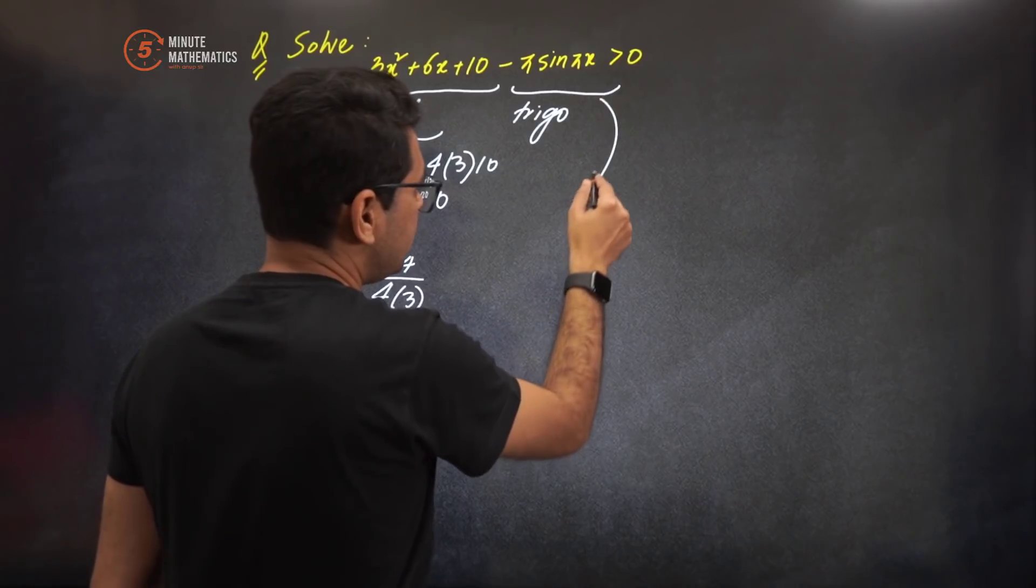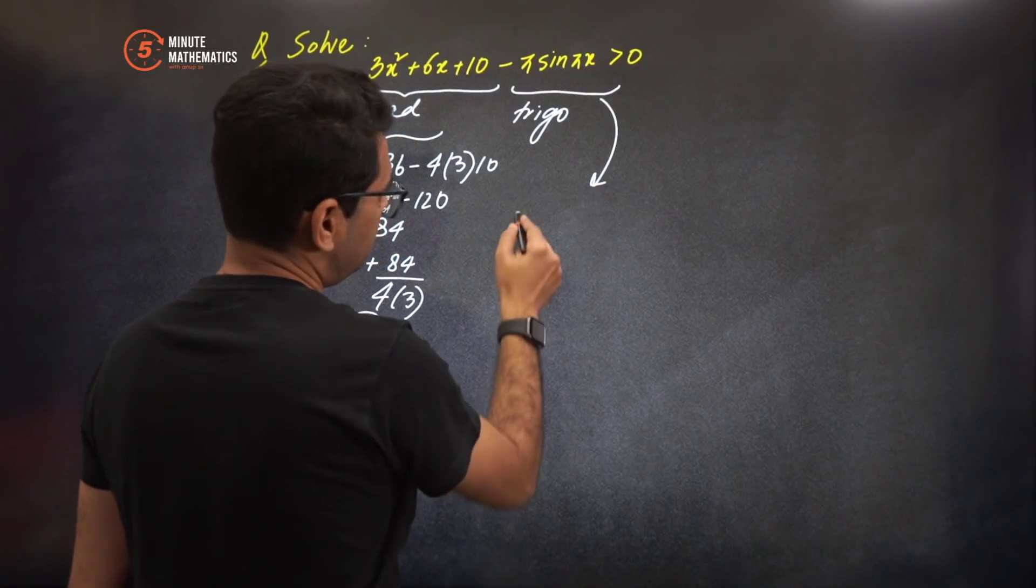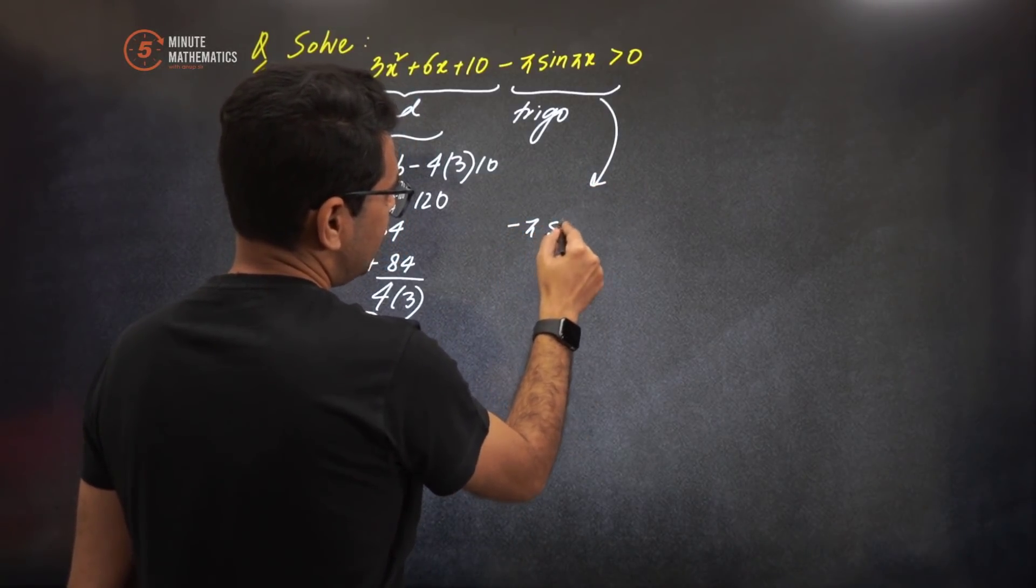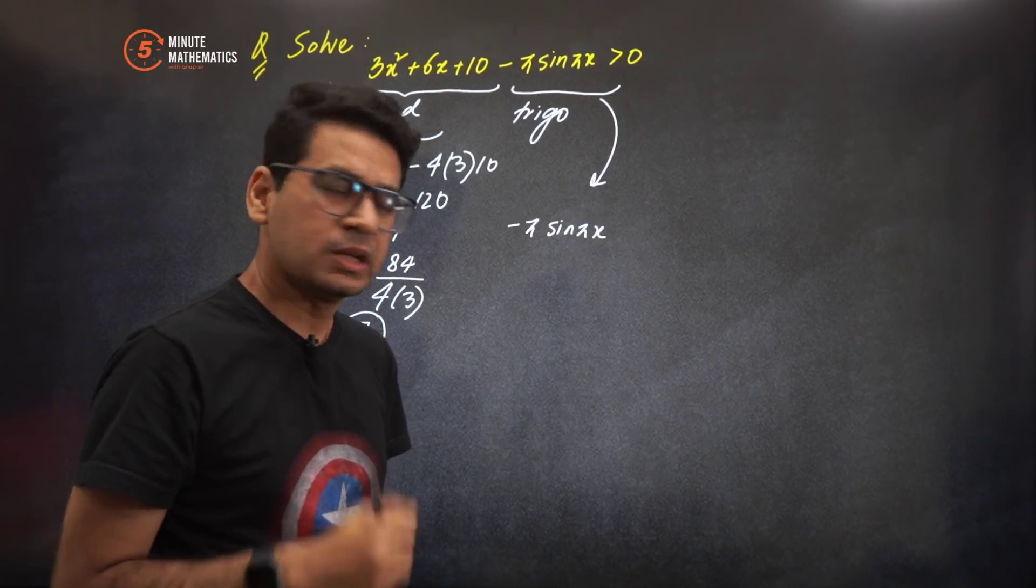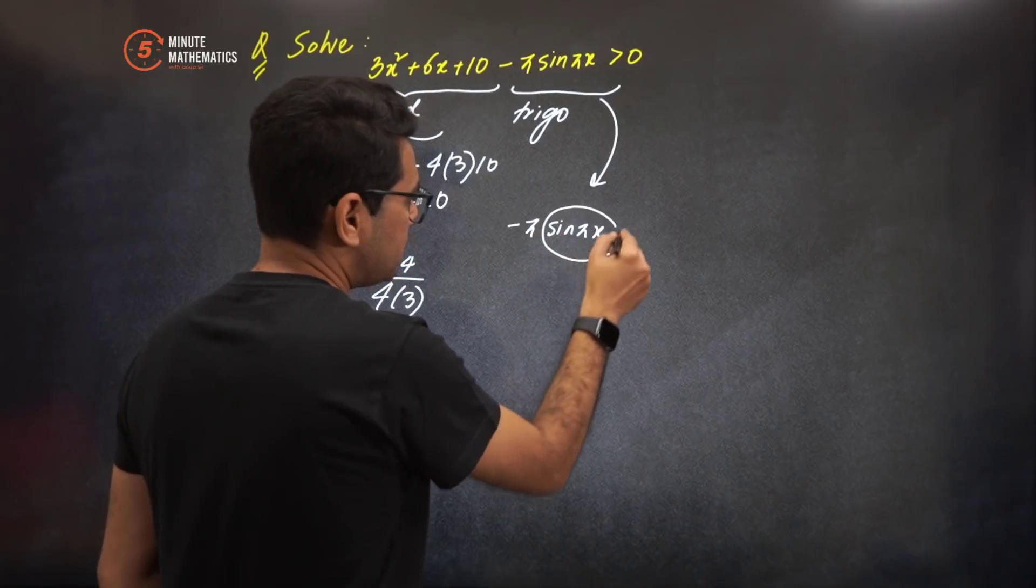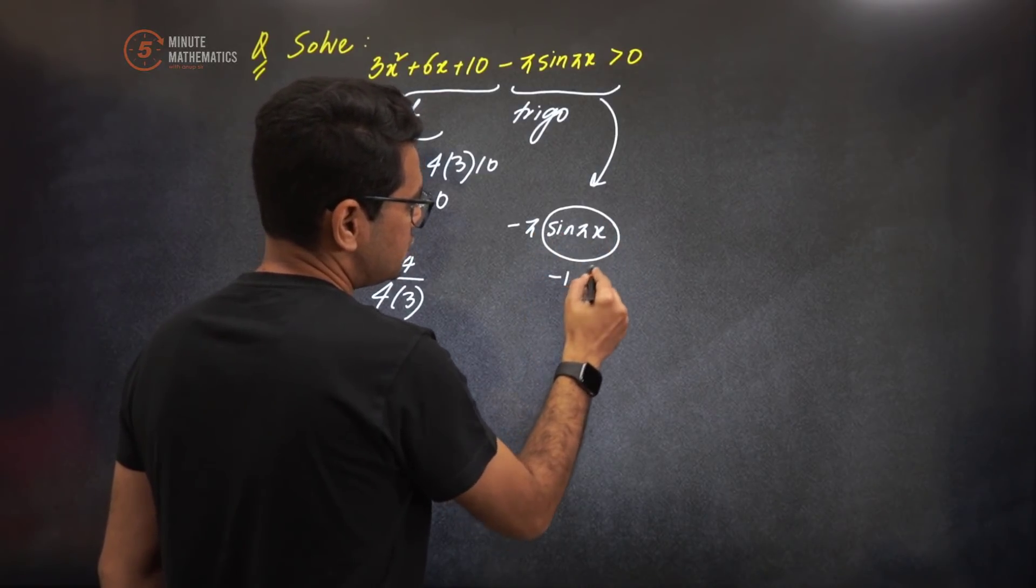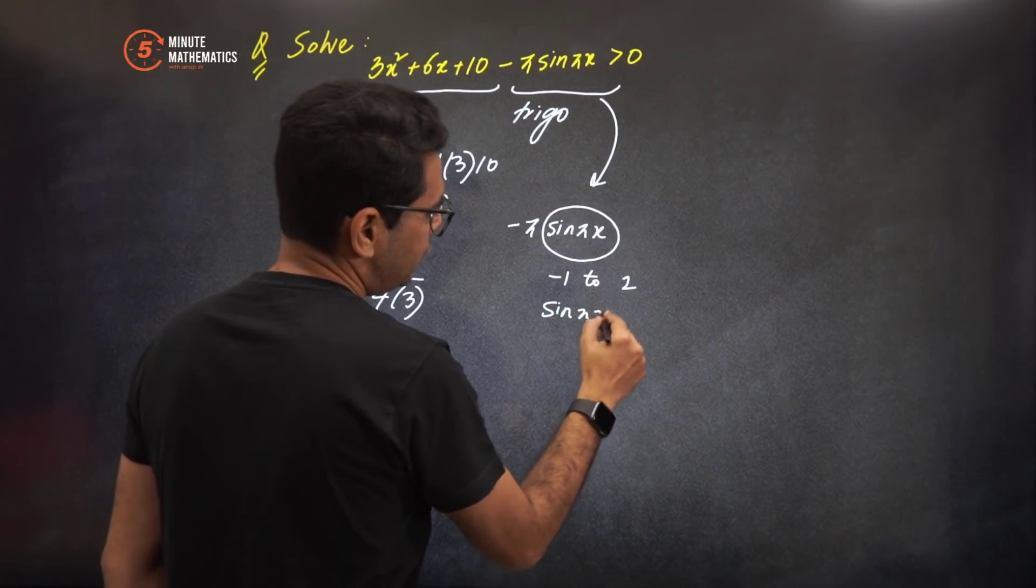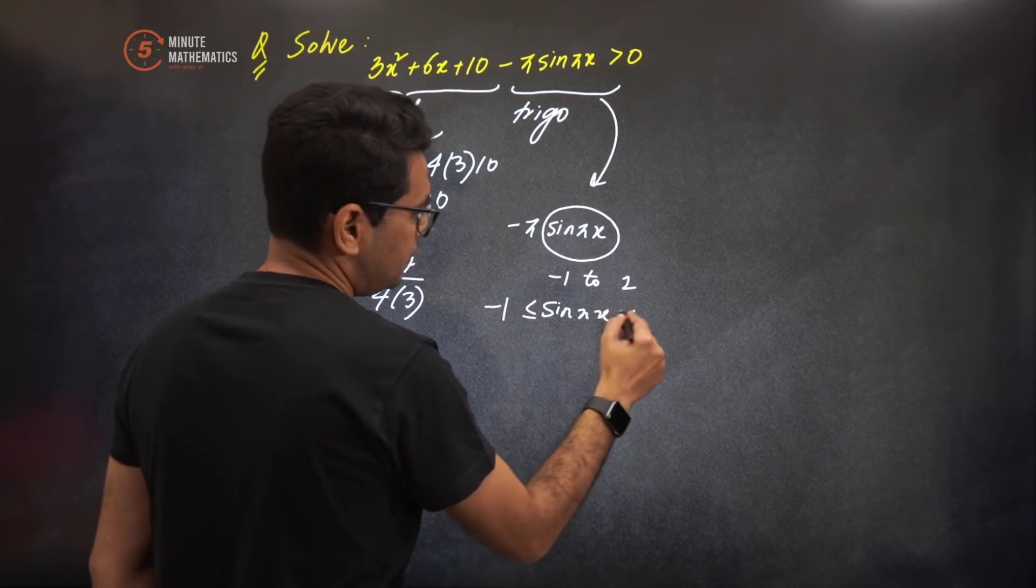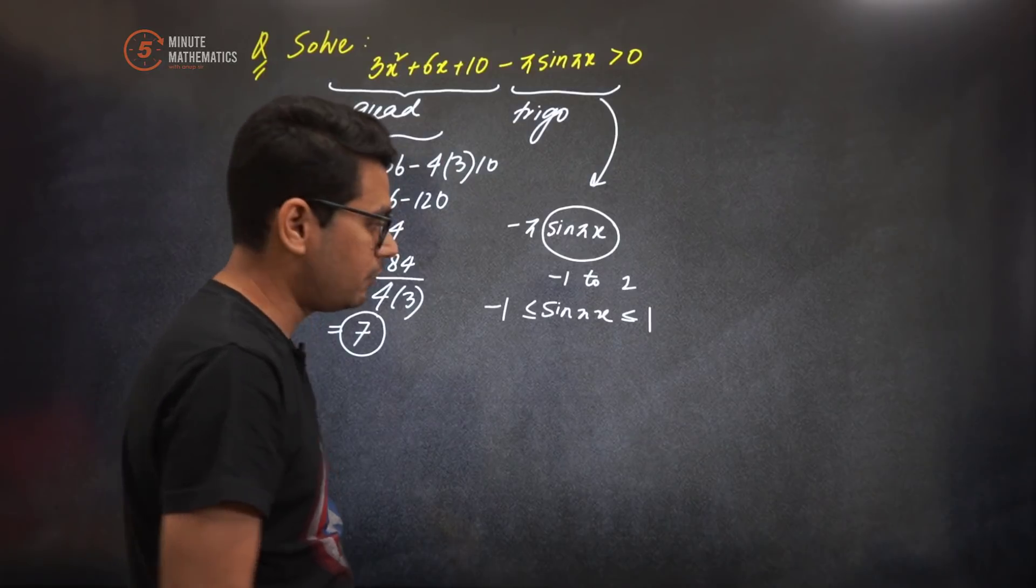Whereas now let's see the trigonometry part. The trigonometry part is -π sin(π/x). What happens with sin? Inside sine, whatever it is, we know it always ranges from -1 to 1. So I can say, independent of the value of x, whatever it might be, this is going to be between -1 and 1.